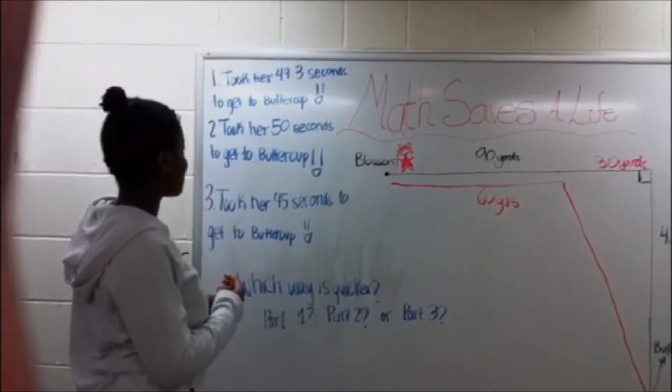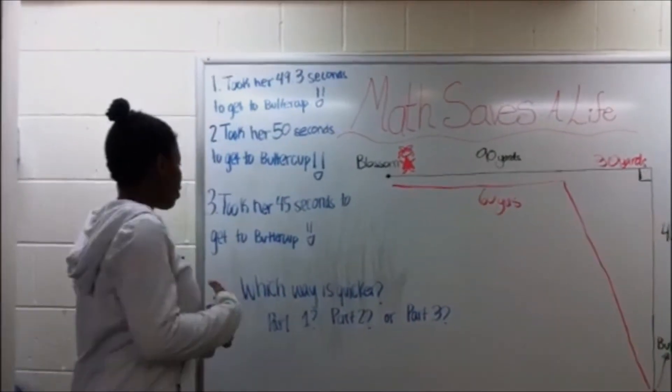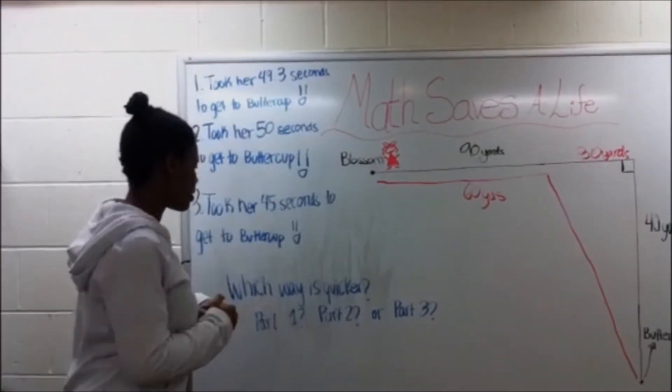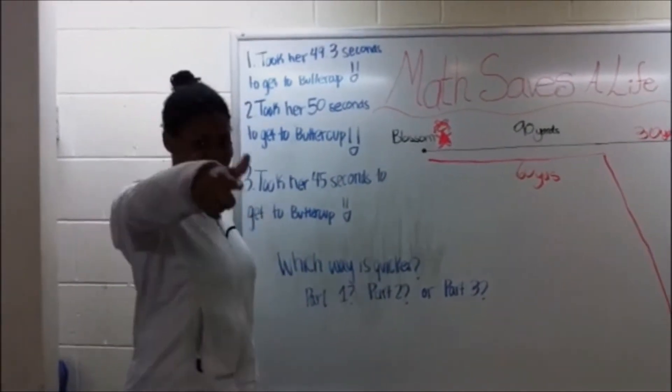The first way took her 49.3 seconds to get to Buttercup. The second way took her 50 seconds to get to Buttercup. The third way took her 25 seconds to get to Buttercup. Which way is quicker? Part 1, Part 2, Part 3. Ding, ding, ding! Part 3 was right!